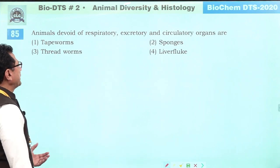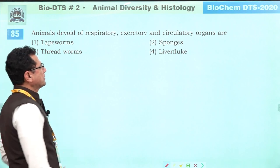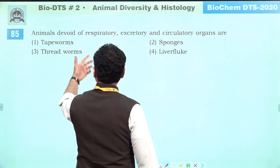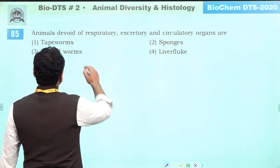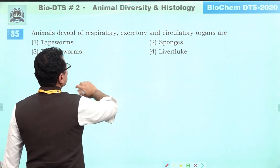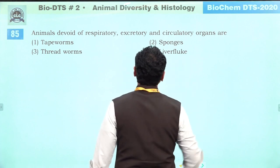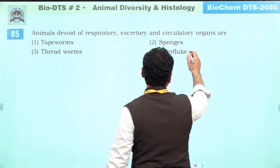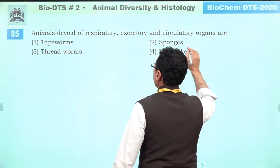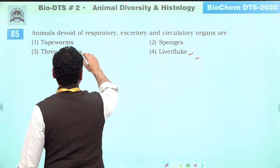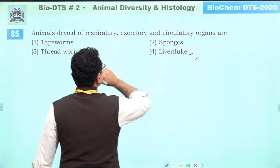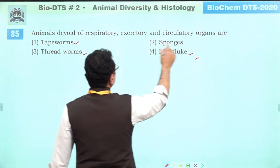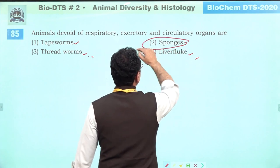Animals devoid of respiratory, excretory, and circulatory organs: tapeworms and threadworms are helminths — they do have some systems. Liver flukes have excretory organs. Sponges have none of these systems. Tapeworms also lack these systems. Answer is two: tapeworms and sponges (the simplest primitive organisms).